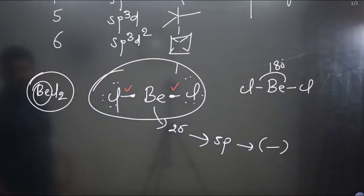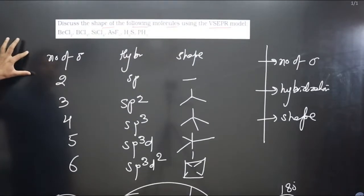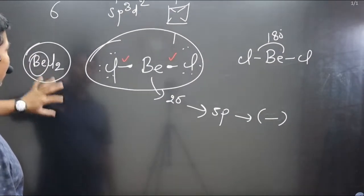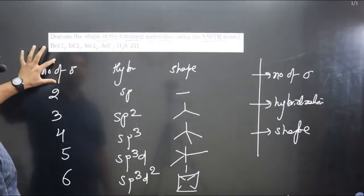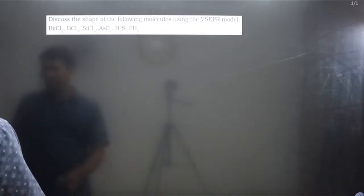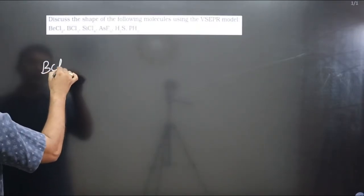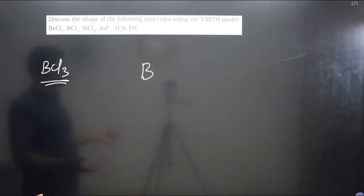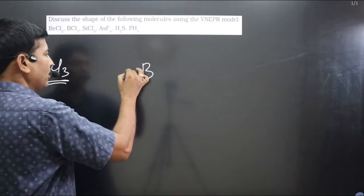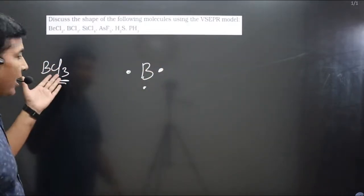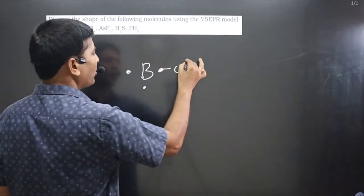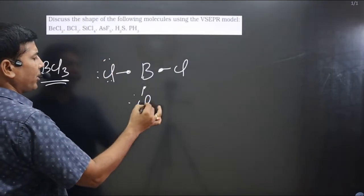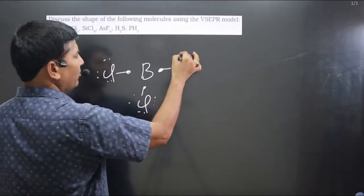Next molecule is BCl₃. Again we find the number of sigma bonds. Boron is present in the 13th group elements and it has three valence electrons. Chlorine is a halogen forming one single bond. The lone pair dots do not play any role in determining the shape — we focus only on the number of sigma bonds formed by the central element.